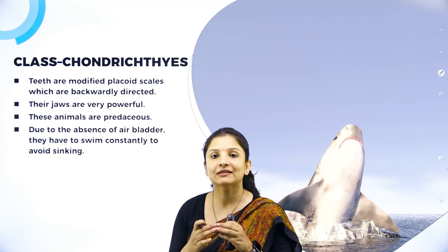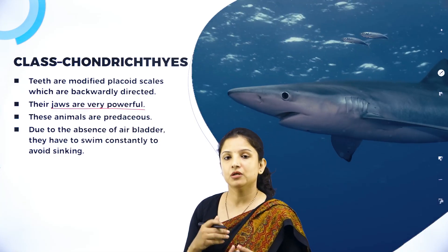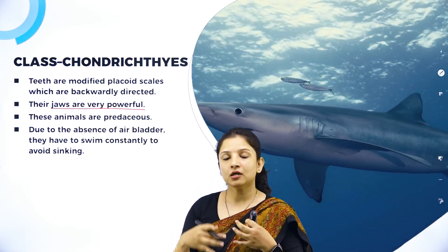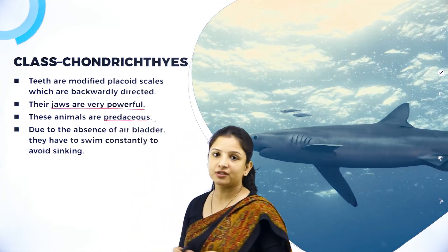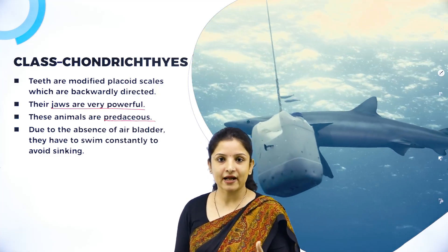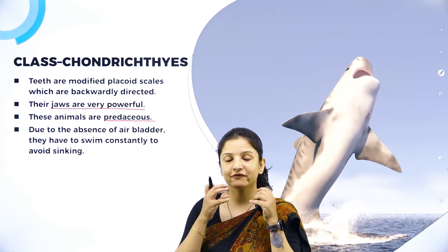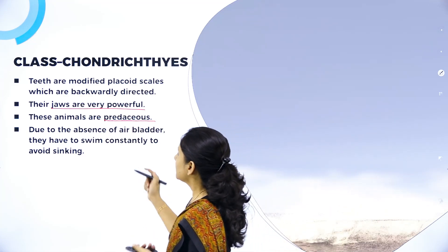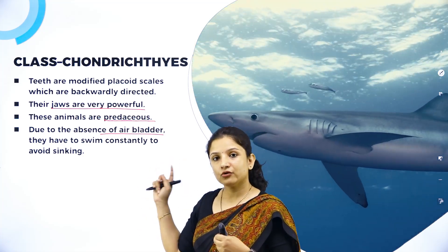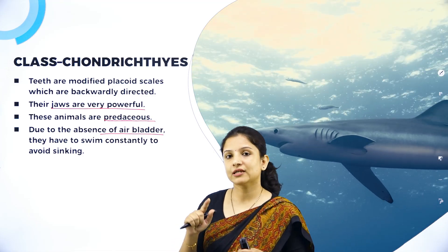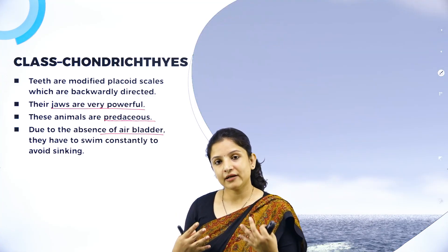Because they have jaws, they are placed under the order Gnathostomata. Their jaws are very powerful because these are carnivorous animals — they prey on other organisms and are very predaceous. We have heard of many shark attacks; they are quite ferocious. They do not have an air bladder. The main difference between Osteichthyes and Chondrichthyes is that they do not have an air bladder, and their gill slits are not covered by an operculum.